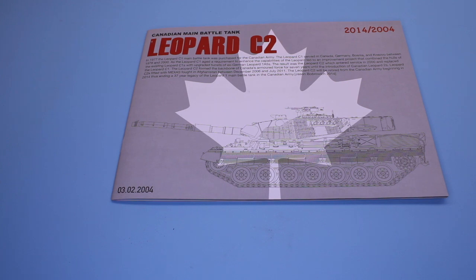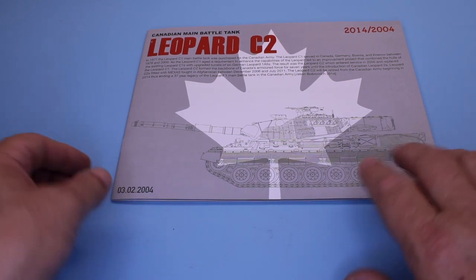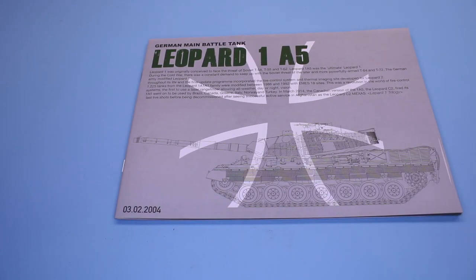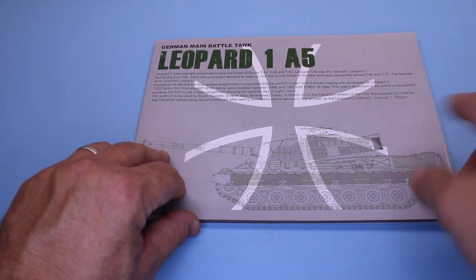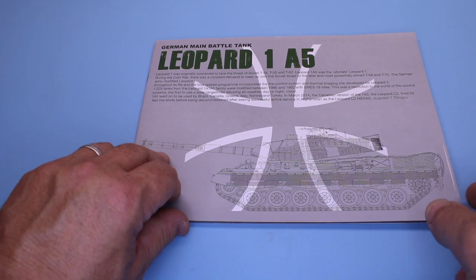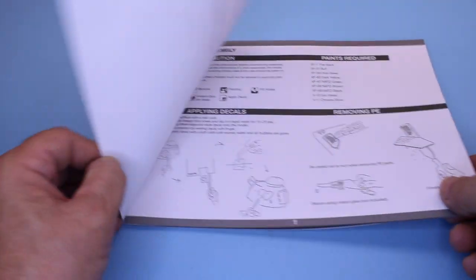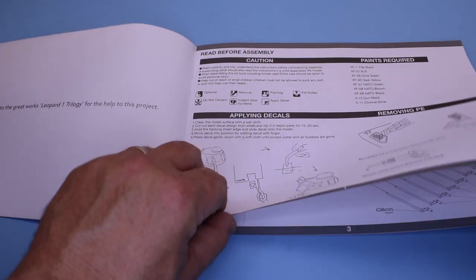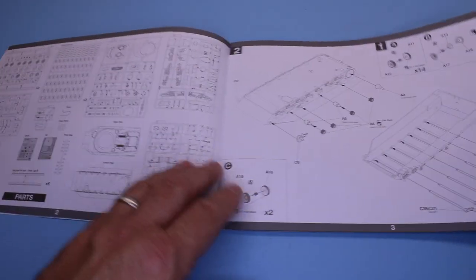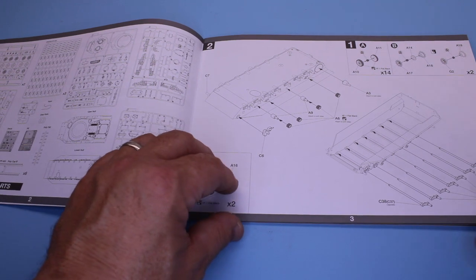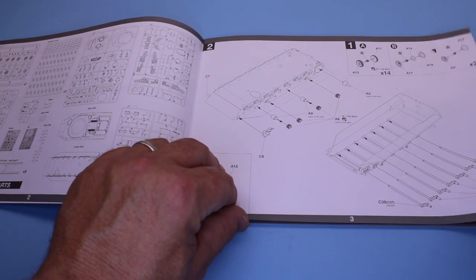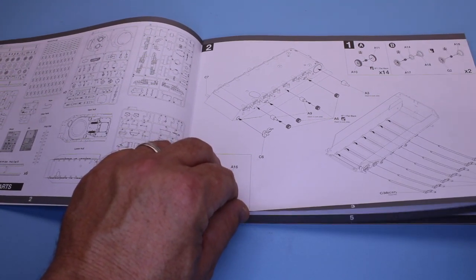Initially looking at the instructions itself, you're going to have a two-sided instruction sheet. On this side you have the Canadian version, and if you flip it over, you have the German version. When you go through the instructions, it has a bit of an explanation of the vehicle history, and then you go into the actual parts of the instructions. They give you a nice spruce sheet layout, and then as like most kits do, you start with the lower chassis, doing the bogey wheels and suspension and parts like that.